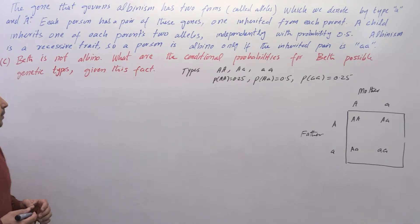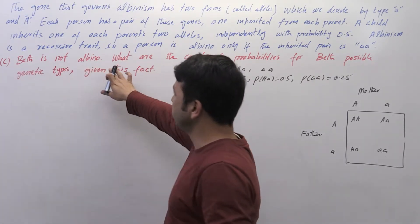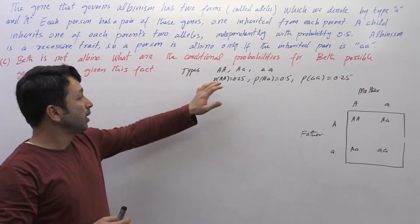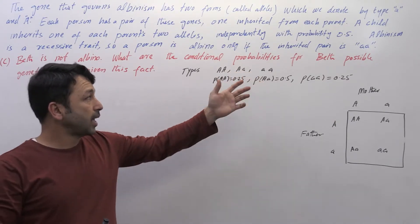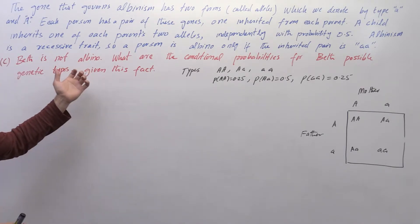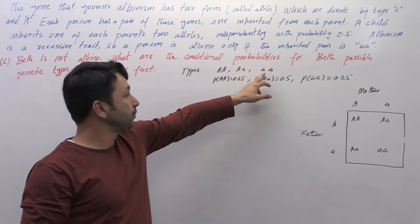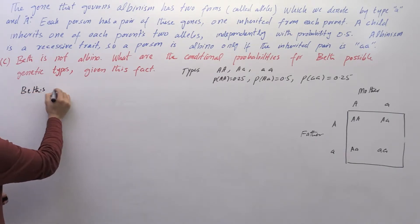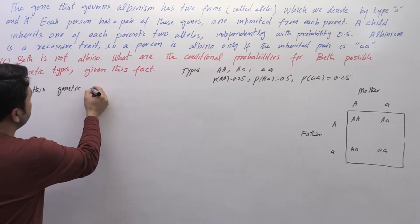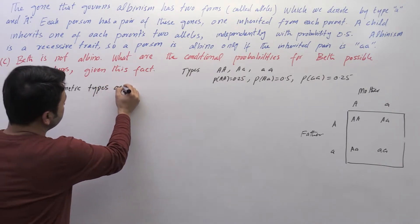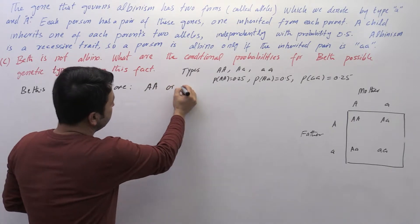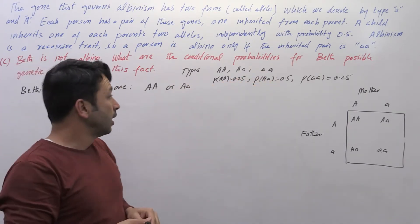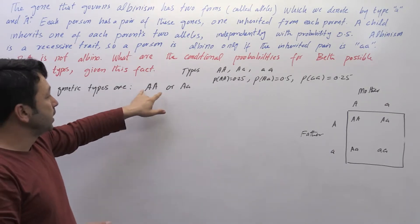We have been told that Beth is not albino. What are the conditional probabilities for Beth's possible genetic types? From the previous part, we had three types. Since Beth is not albino, she cannot be of type small 'aa'. So Beth's possible genetic types are capital 'AA' or capital 'A' small 'a'. We have been asked to find the conditional probability for each of these possible types.